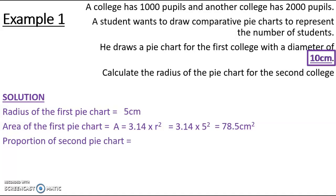So now I need to know how much bigger or smaller to make my pie chart. The first college has 1,000 pupils and the other college has 2,000 pupils. So to work out my proportion, how much bigger or smaller, I can see that it is increased by 1,000 pupils. So it's 2,000 over 1,000, it's doubled in size. It's two times bigger.